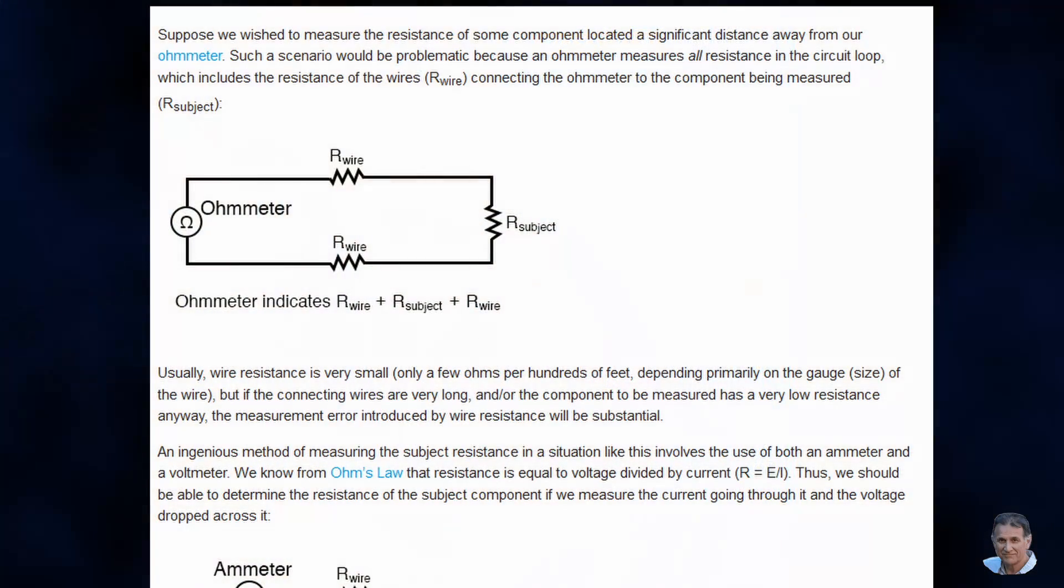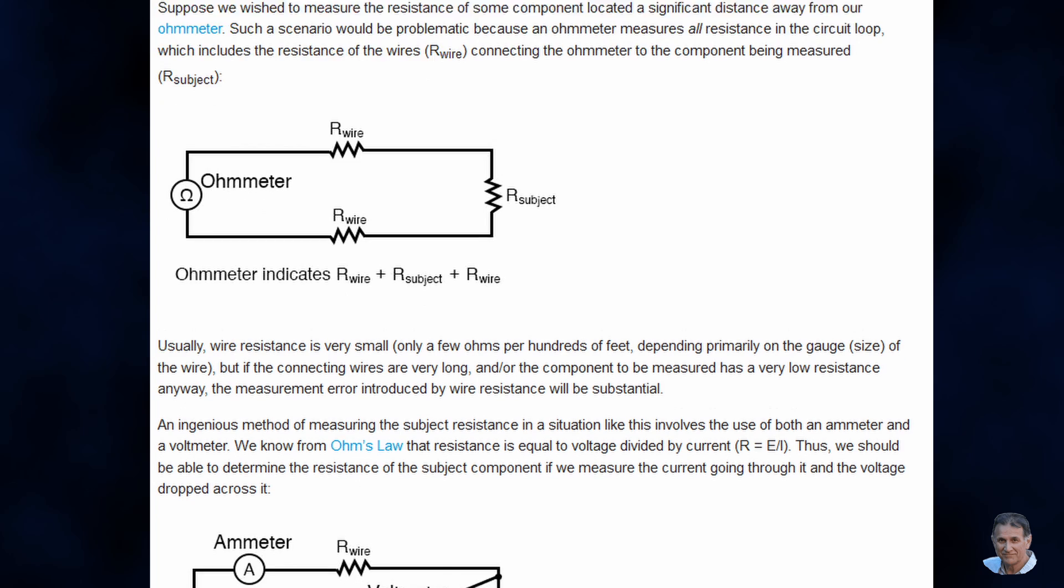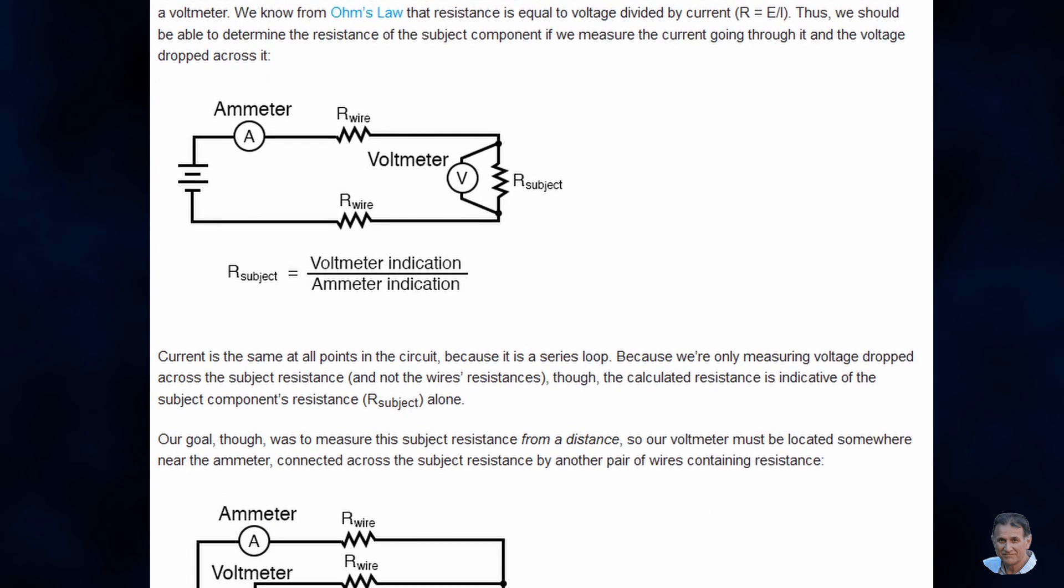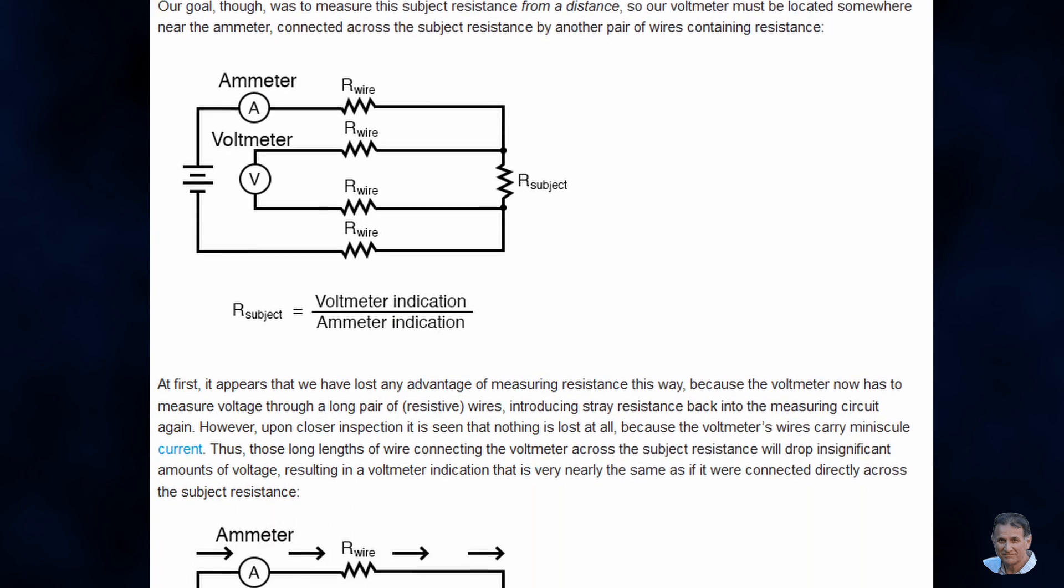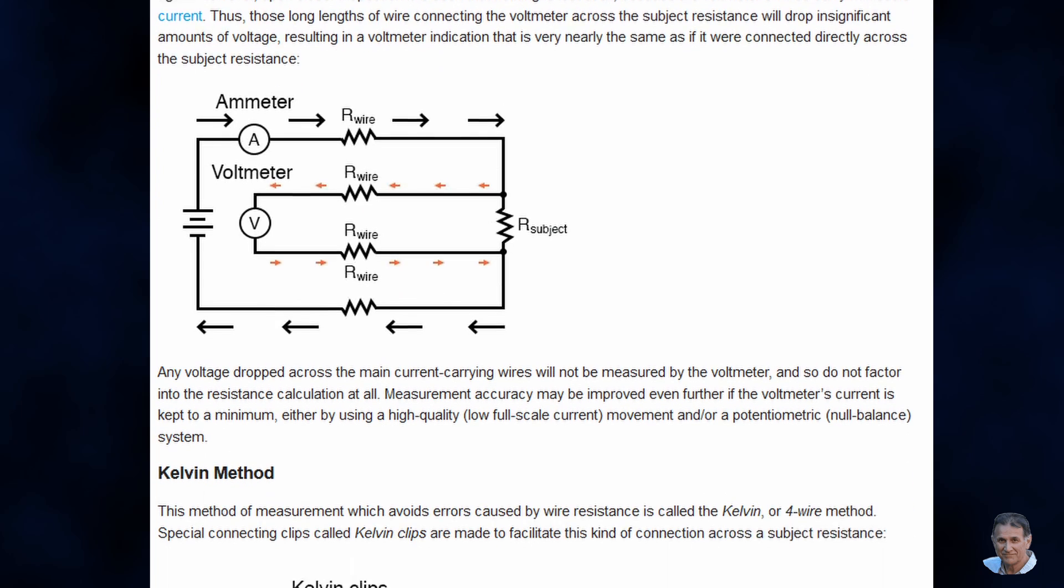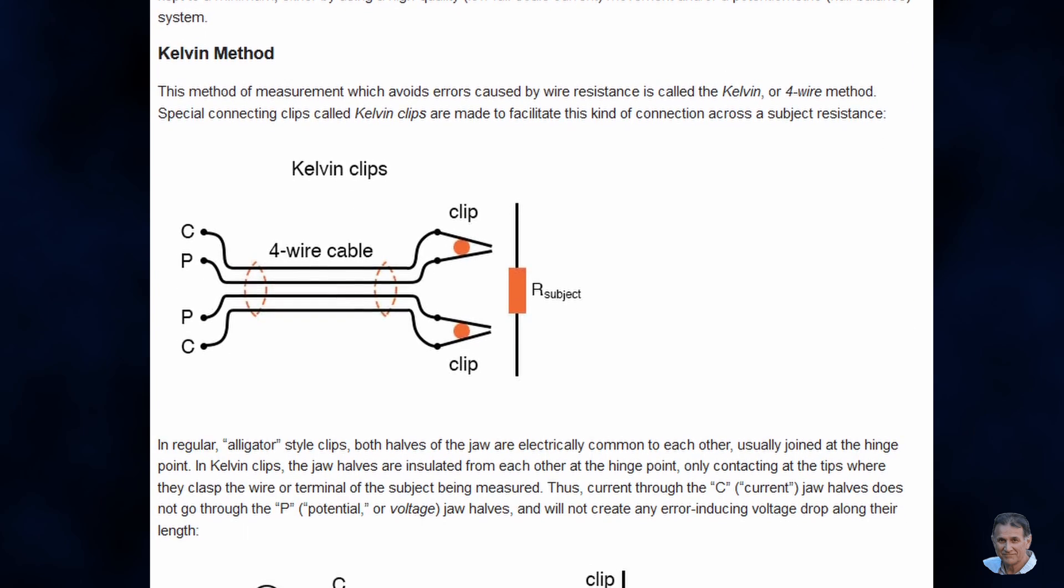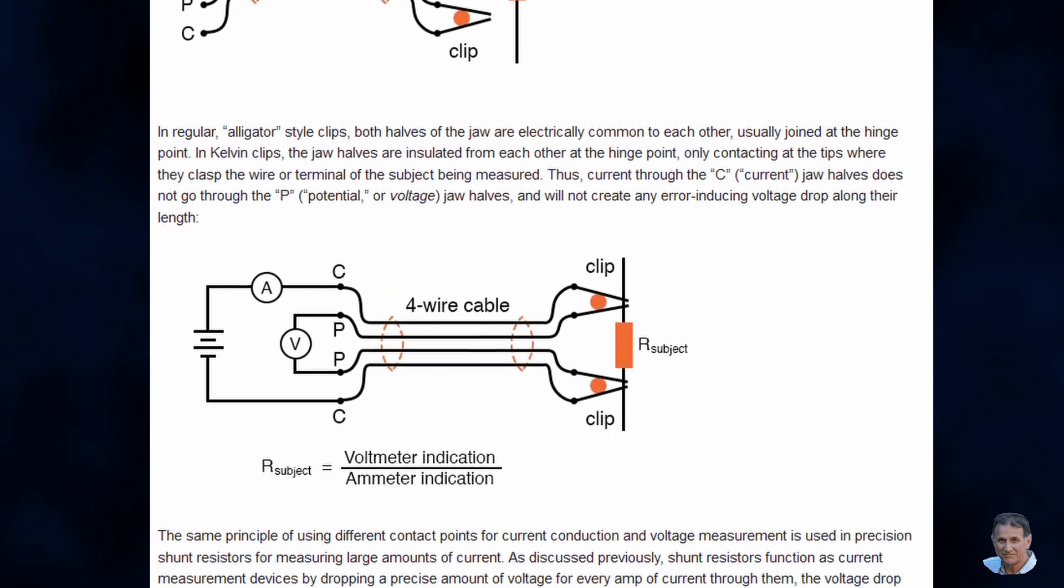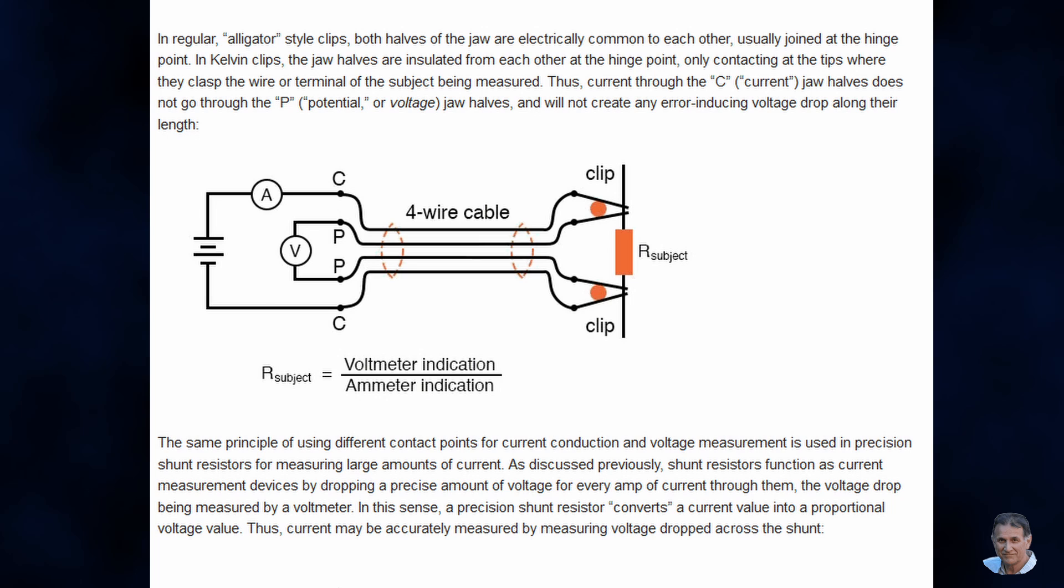This test lead problem was solved back in the 1860s with Lord Kelvin's four wire method. There are some good descriptions on the web but basically we use one pair of wires to supply a known current through the resistance and a second pair to measure the voltage. Then we can calculate the resistance using Ohm's law.